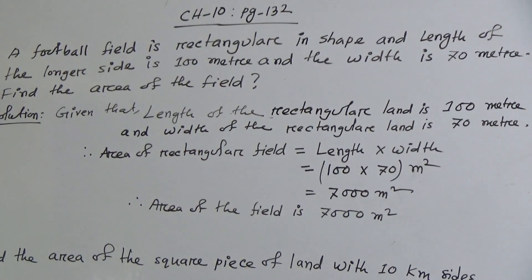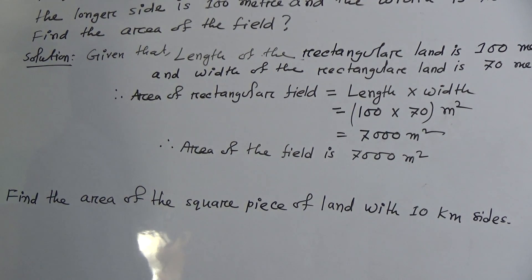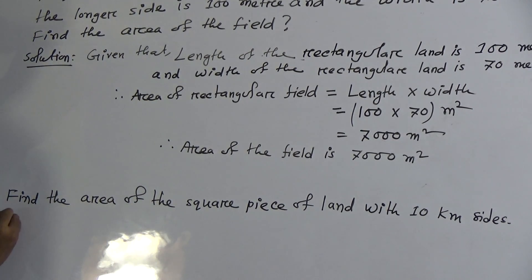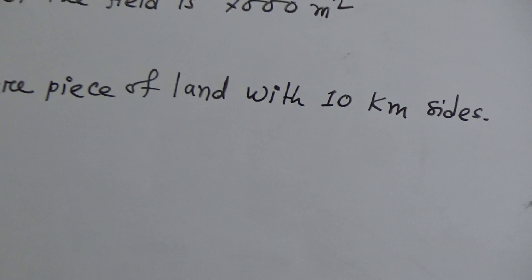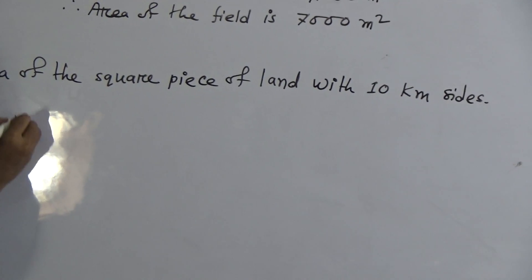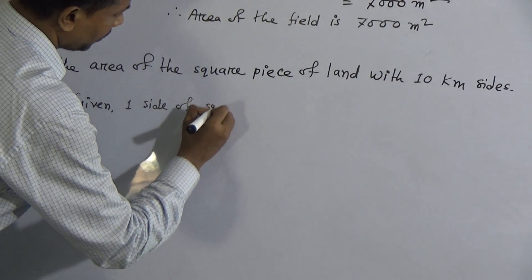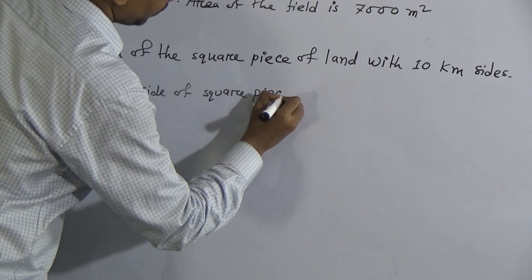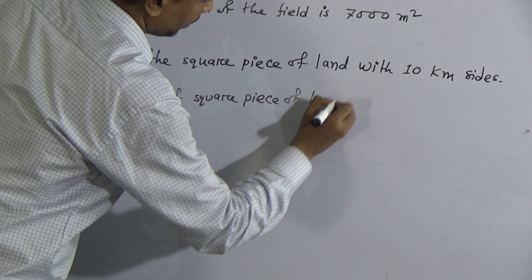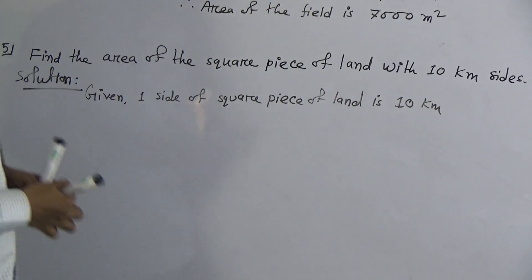Now, I will solve question number five. See, find the area of the square piece of land with 10 kilometer sides. Write, solution. Given one side of the square piece of land is 10 kilometer.